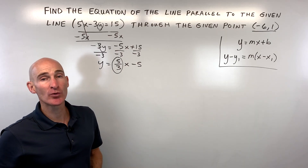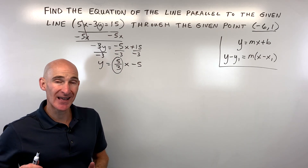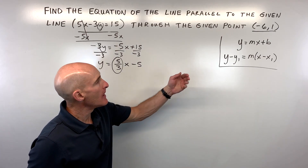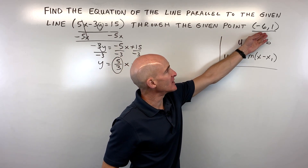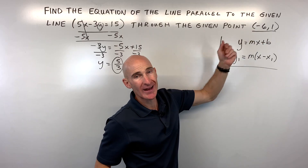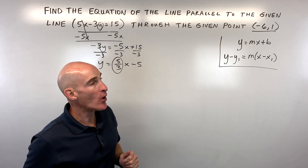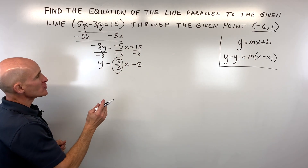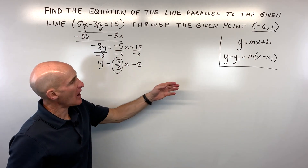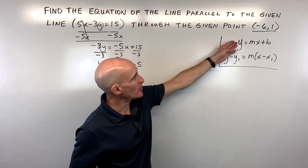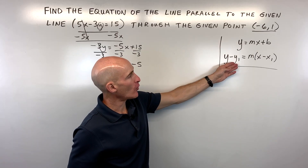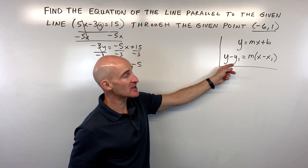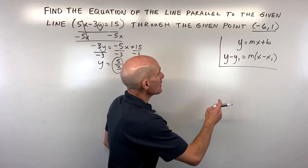So in our equation, we're going to want to use that same slope of 5 thirds, but we want to make sure that it goes through the point negative 6, 1. There are two different ways to do this problem: you can use the slope-intercept form or the point-slope form. Let me show you the point-slope form first.